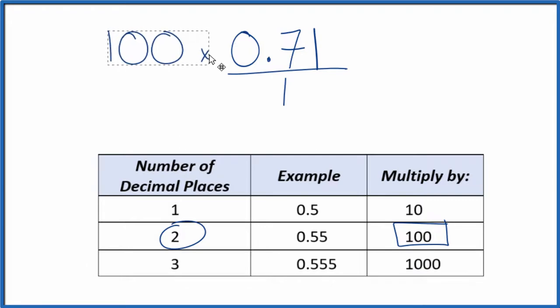So 100 times 0.71, that ends up giving me 71, and that's a whole number.